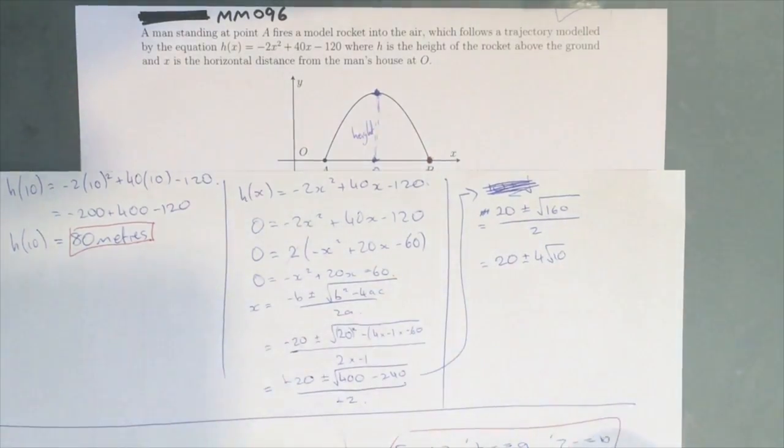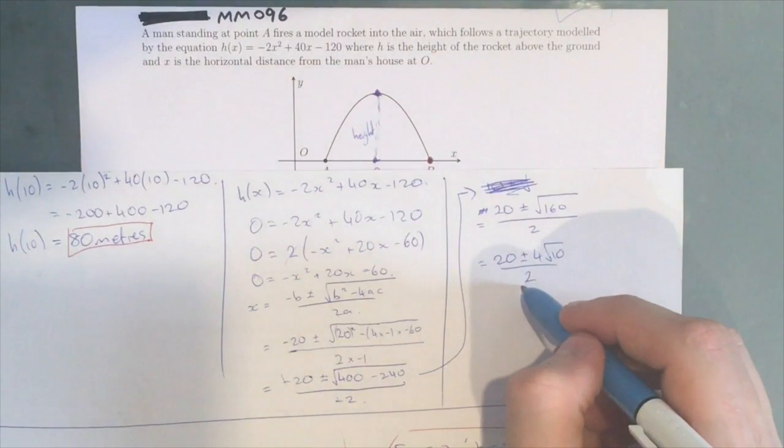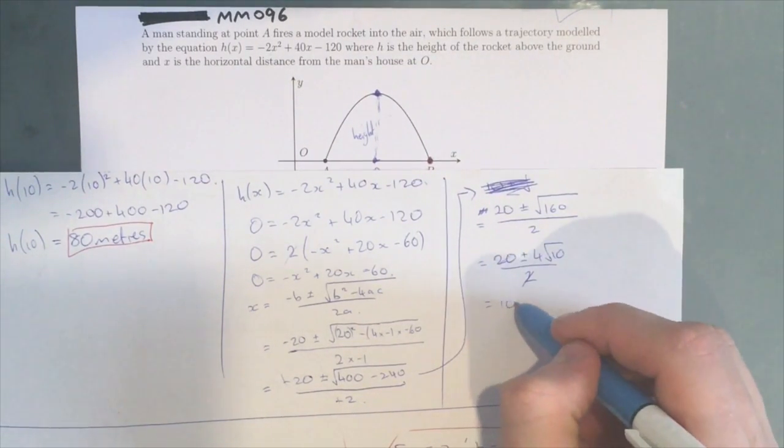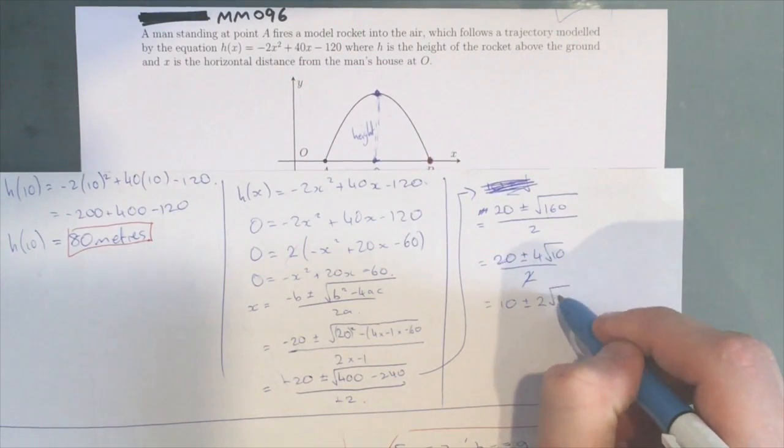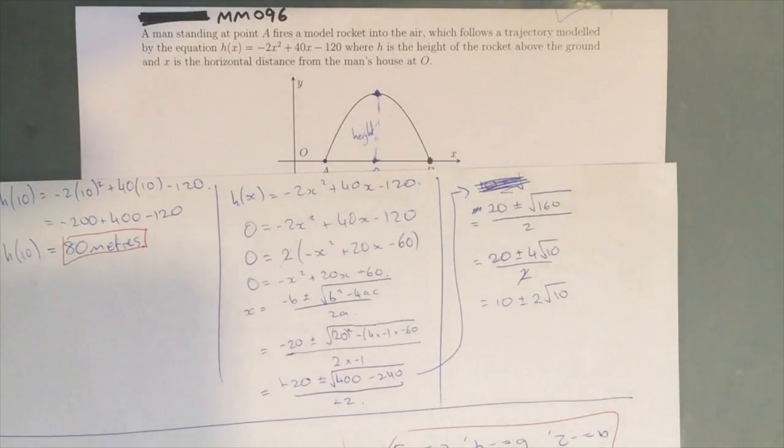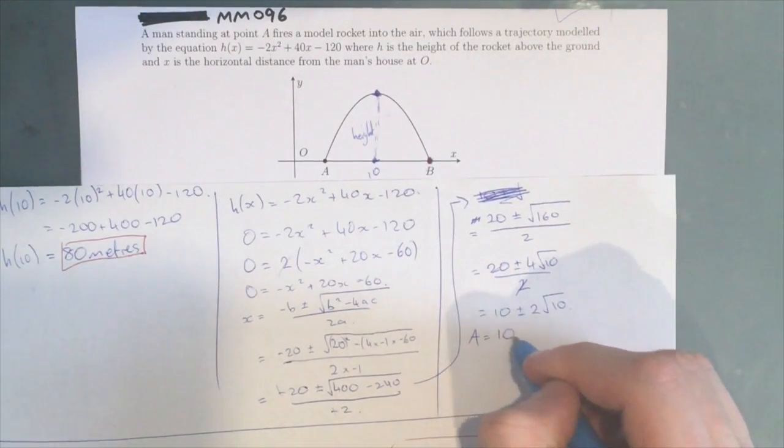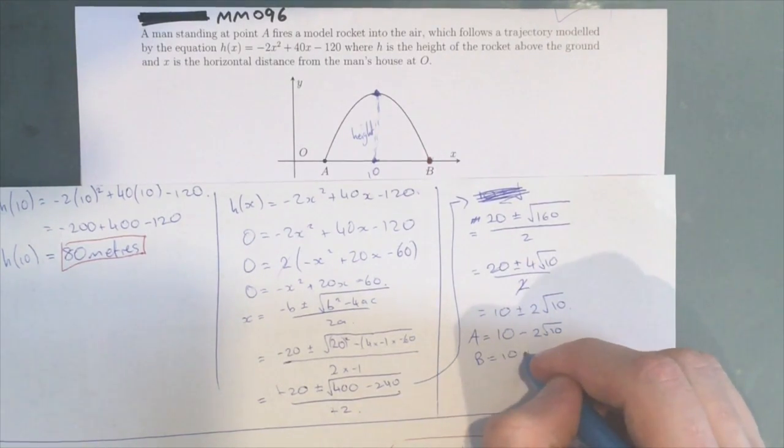Over 2, these 2s can cancel each other, which gives 10 ± 2√10. Which means that A = 10 - 2√10, and B = 10 + 2√10.